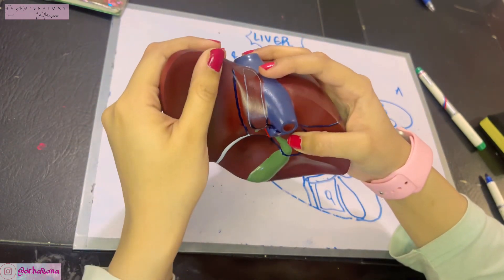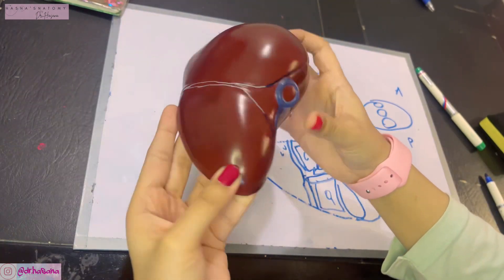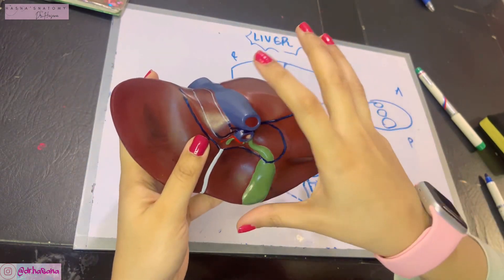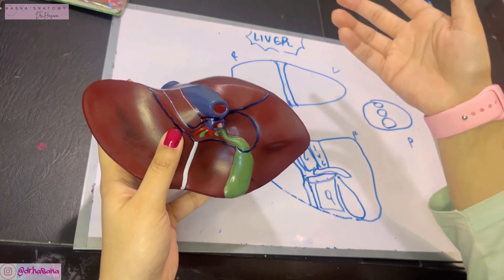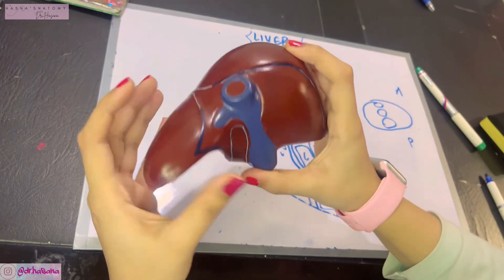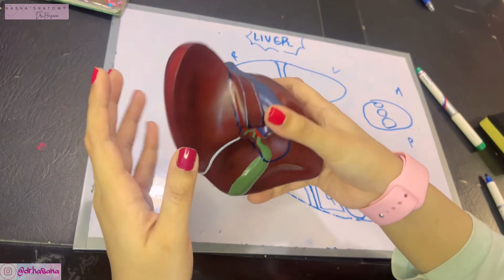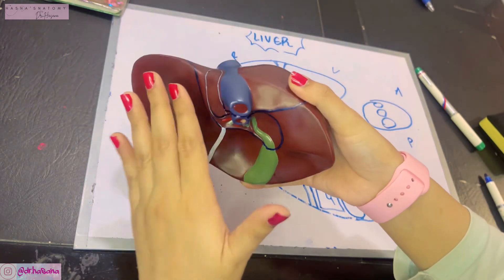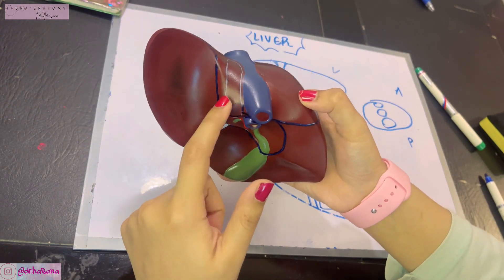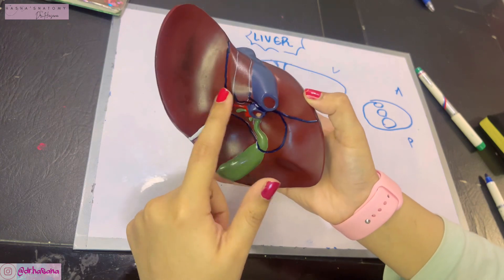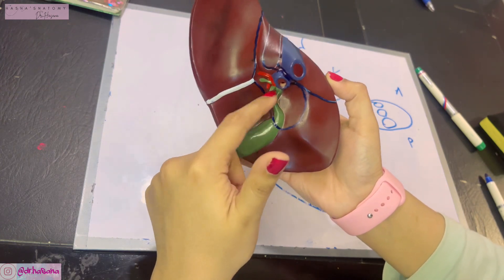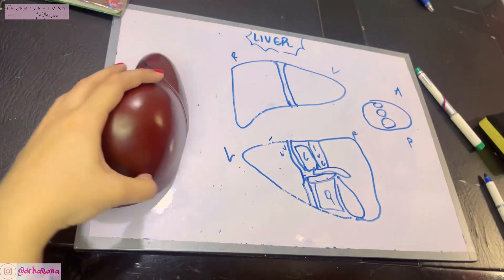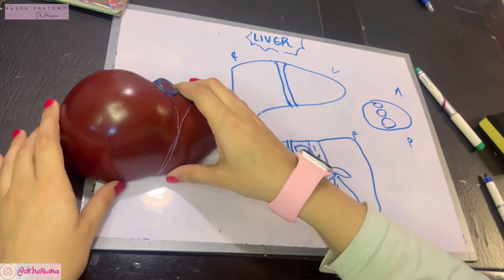The left lobe forms about one sixth of the entire liver, whereas the right lobe constitutes five sixths — so it is a small lobe. The only important feature of the left lobe is that on its inferior surface, close to the caudate lobe, there is an elevation called the tuber omentale, where the lesser omentum will attach.